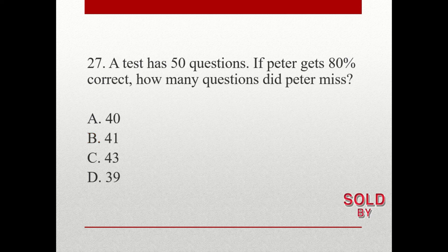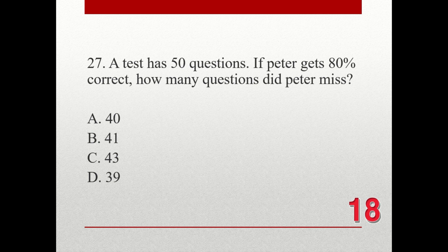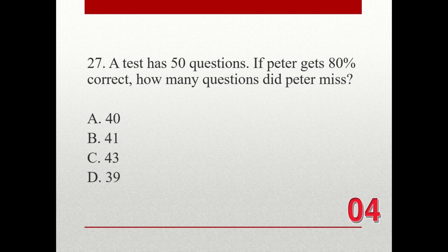Question number 27. A test has 50 questions. If Peter gets 80% correct, how many questions did Peter miss? A. 40. B. 41. C. 43. D. 39. The correct answer is A. 40.